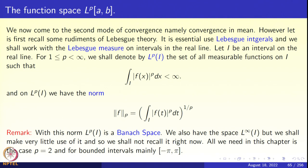Let I be an interval on the real line and p be a real number between 1 and infinity, where we include 1 and exclude infinity. Lp of I is the set of all measurable functions on I such that the integral of |f(x)|^p dx is less than infinity — the p-th power of the modulus of f is integrable over I. The Lp norm is defined to be the integral over I of |f(t)|^p, the whole thing to the power 1/p.